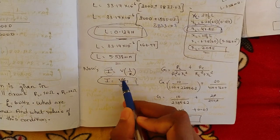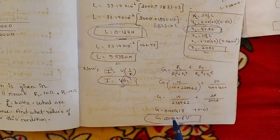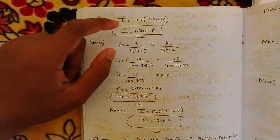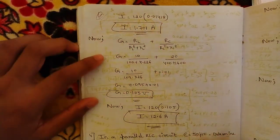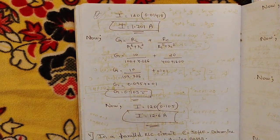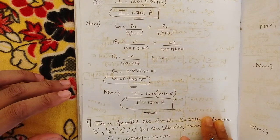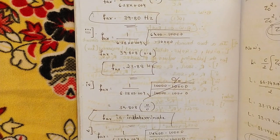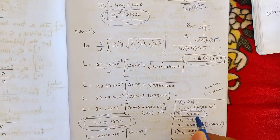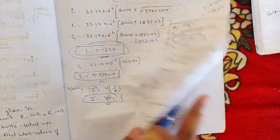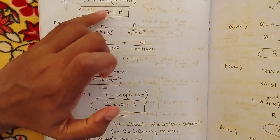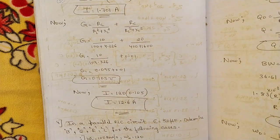Using I = V × G, where G is conductance with the given formula, and V = 120 volt: with XL = 47.85, current I₁ = 1.701 ampere. With XL = 2.085, current I₂ = 12.6 ampere. So the two current values in this question are 1.701 A and 12.6 A.